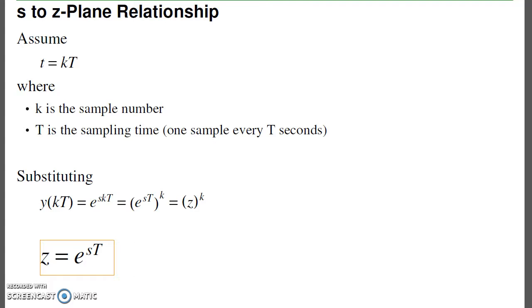To convert from the s-plane to the z-plane, I assume that time t is k times the sampling period T. If I substitute, Laplace assumes everything is e^(st), or e^(s*kT), or (e^(sT))^k. So the conversion from the s-plane to the z-plane is z = e^(sT), where T is your sampling period.